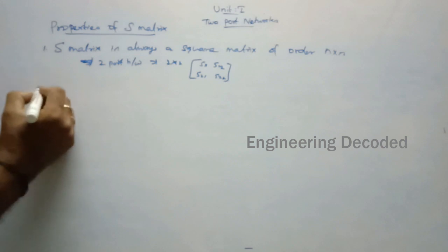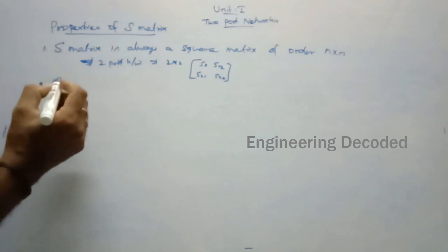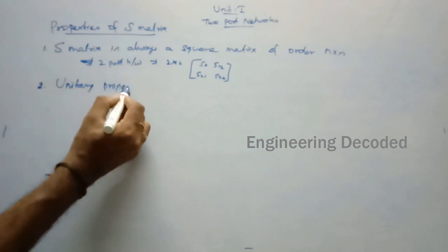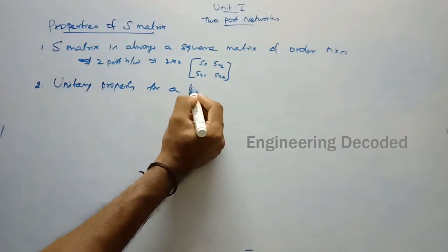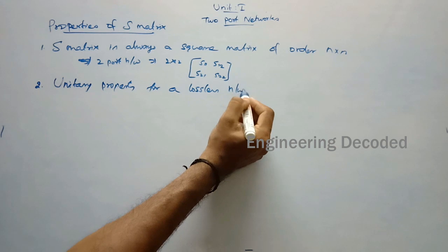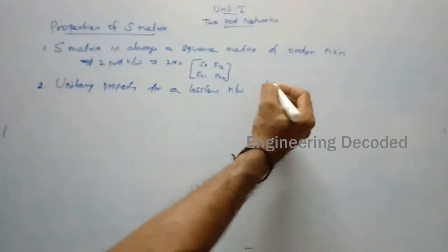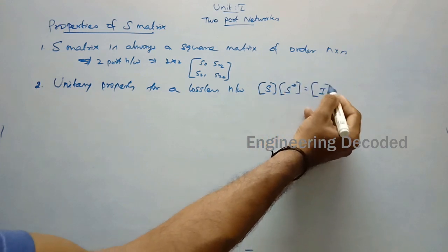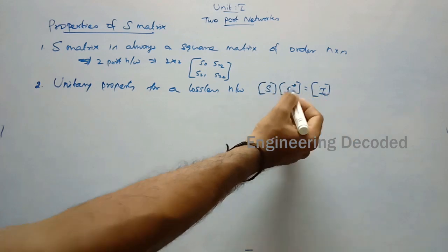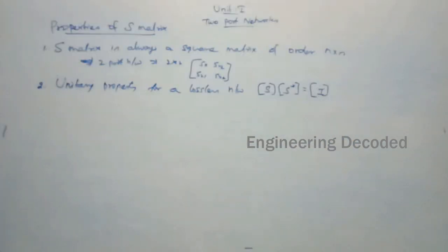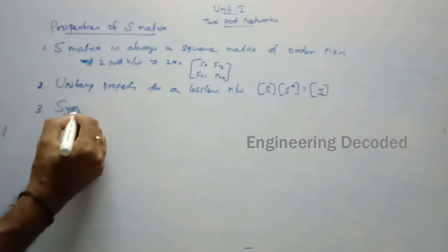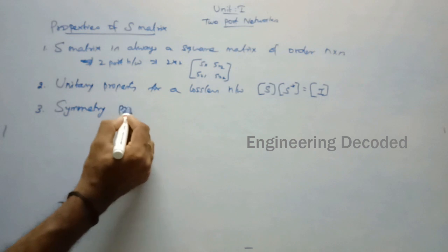The second property is the unitary property. For a lossless network, the unitary property states that S multiplied by S* (S-conjugate) equals the identity matrix I, or equivalently S multiplied by S-transpose equals the identity matrix I.